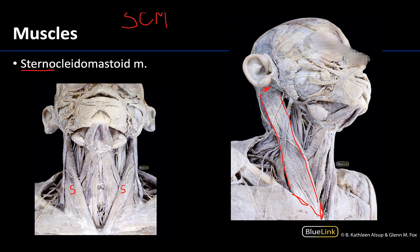So this large rope-like muscle is the sternocleidomastoid, and you can see both sides on this particular image. You can also see in these images the external jugular vein, which runs superficial to the muscle — that's another important anatomical relationship. This muscle is an important component of the anterior neck and serves as a major player in the division of the cervical triangles, so we'll come back to this one over and over again.